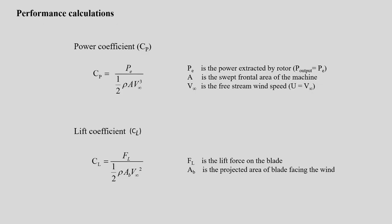In wind energy, the power coefficient is considered as the ratio of power extracted by the rotor to the power available in the free stream wind speed. Here CP is represented as P suffix E — the power extracted by the rotor — divided by the power in the free stream. Sometimes in the literature, PE is also represented as P output; both terms are the same.